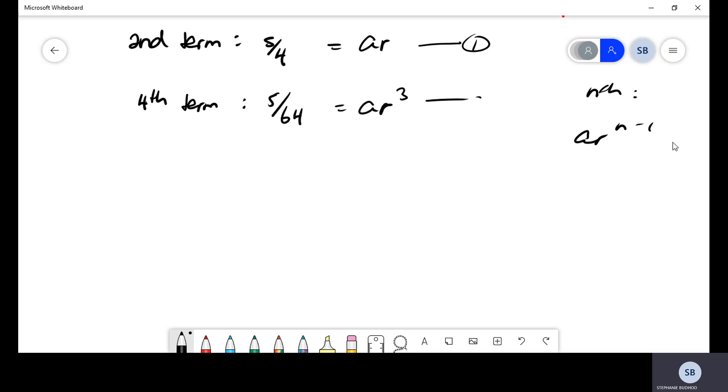And essentially what you did here is create two simultaneous equations. If you were to divide these two equations, that would eliminate A. And you would get R squared being equal to, I think it's 1 over 16, such that R is a quarter. You want to take the positive value of this.